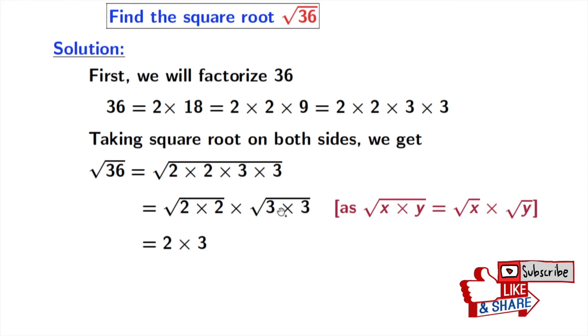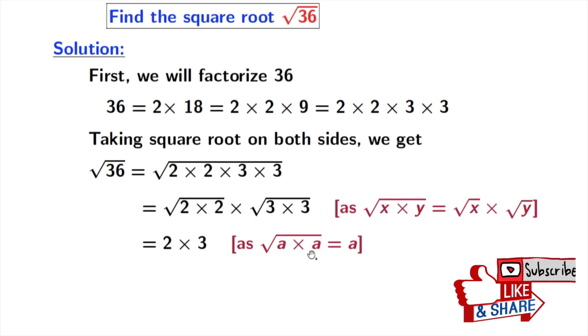Now from this we get 2 times 3. Here we have used the rule of square root of a times a is equal to a. In the first square root a is 2 and in the second square root a is 3. Now after multiplication we get 6. And this is our final answer.